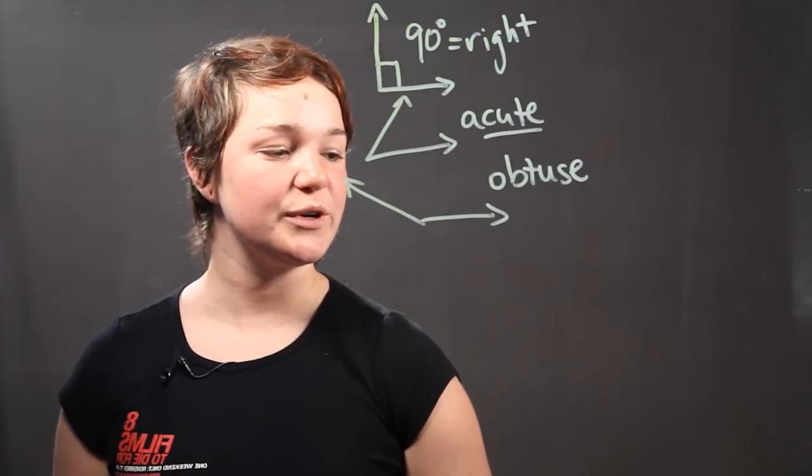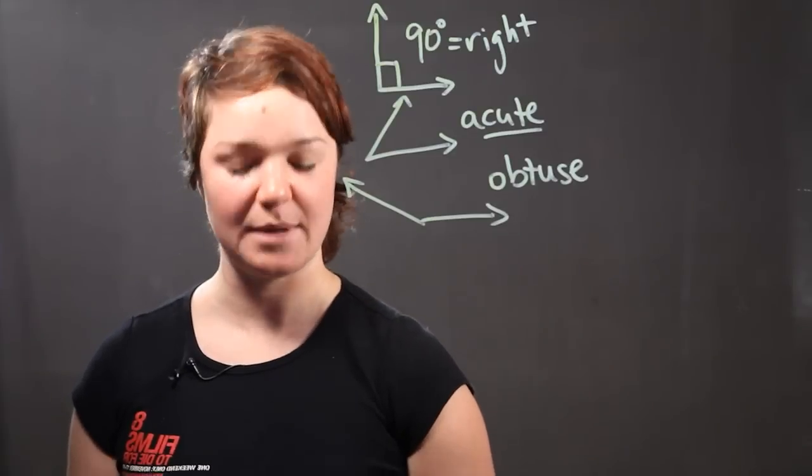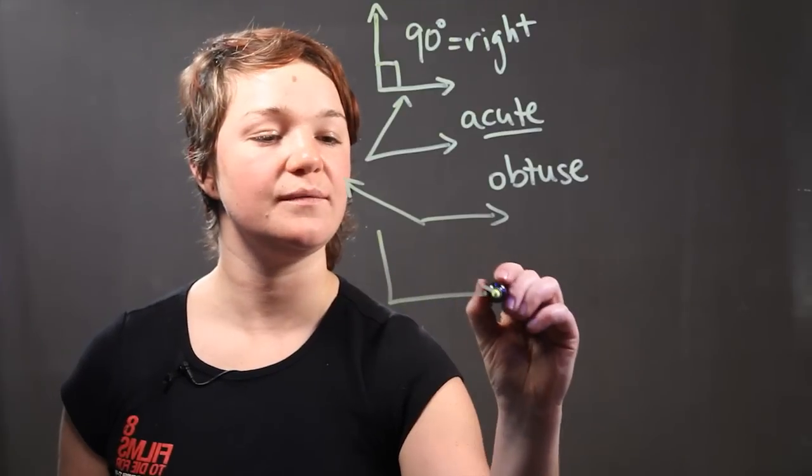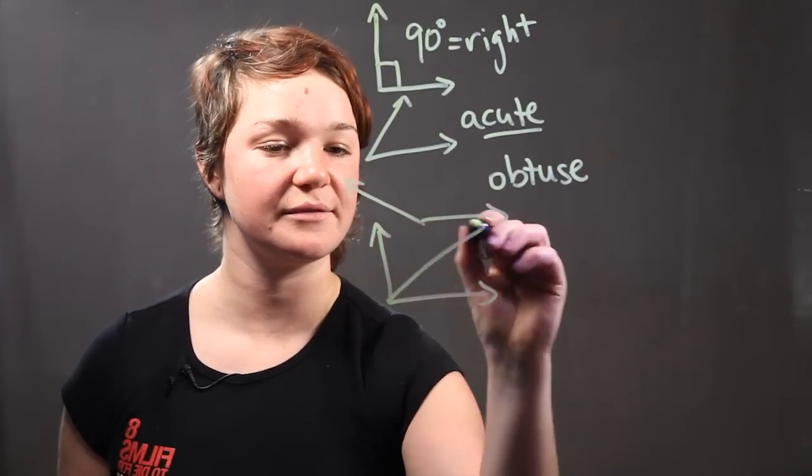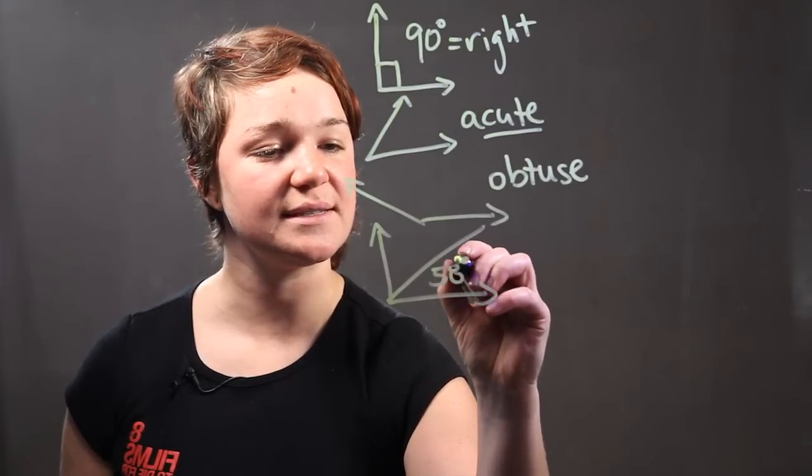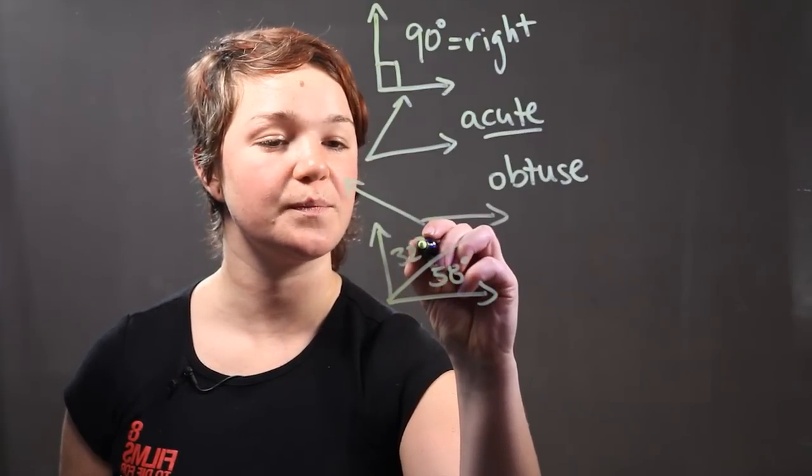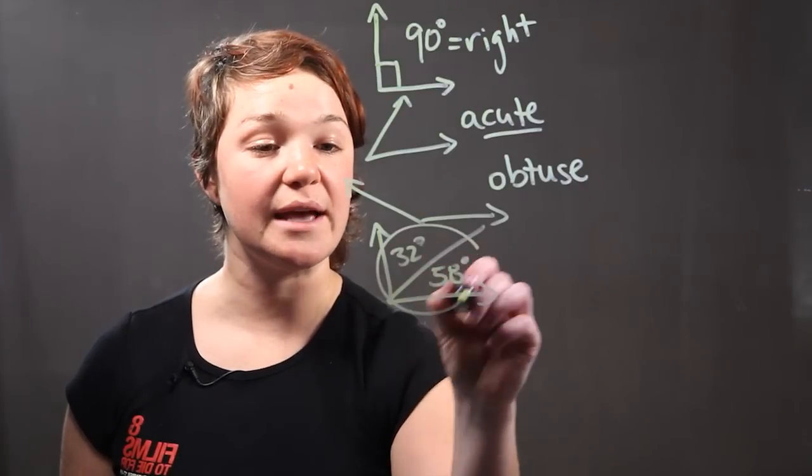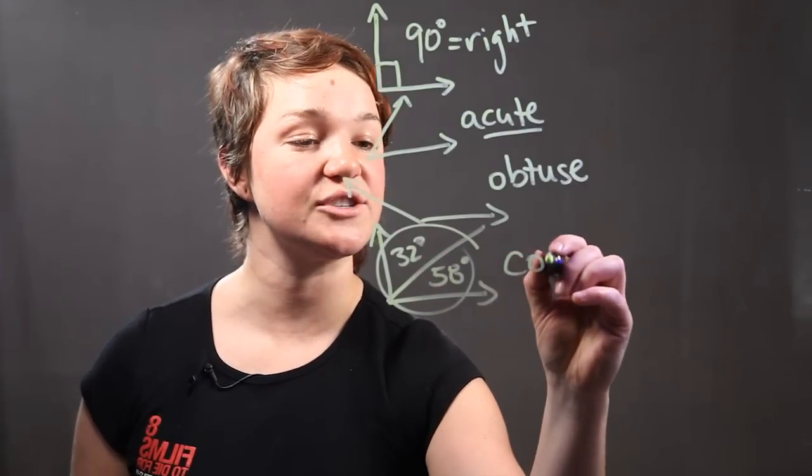Now, we're going to talk about complementary and supplementary angles. If you have a 90 degree angle that is split in half, let's say one side is 58 degrees, the other side is 32 degrees, but they add up to 90. These two angles right here are called complementary angles.